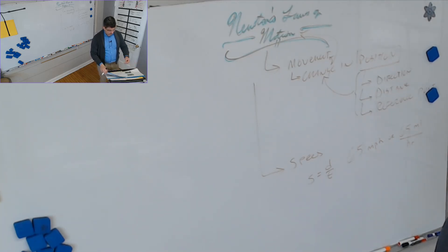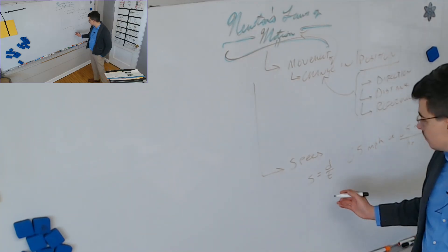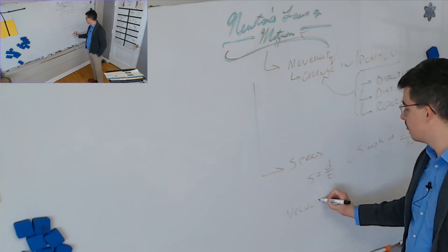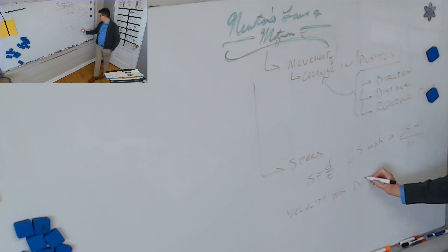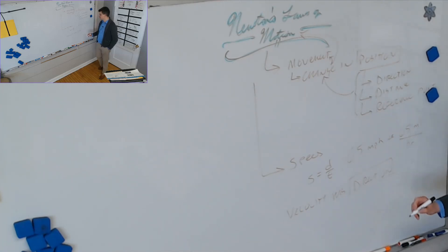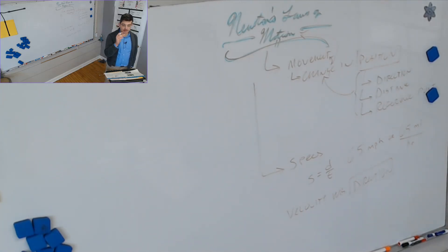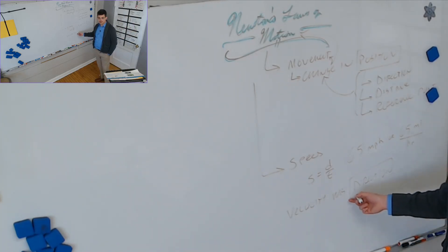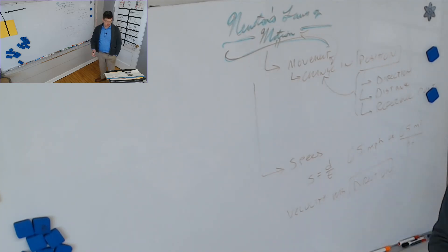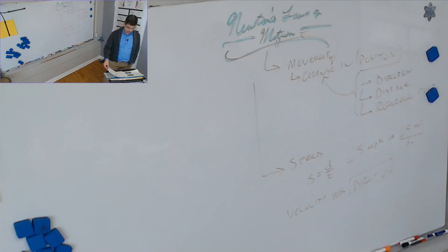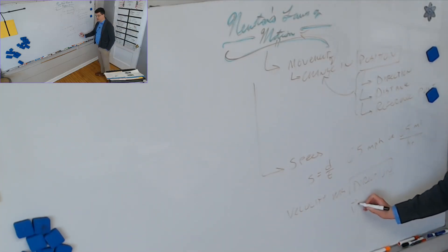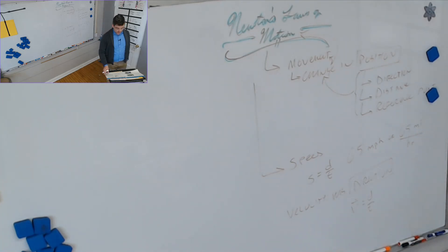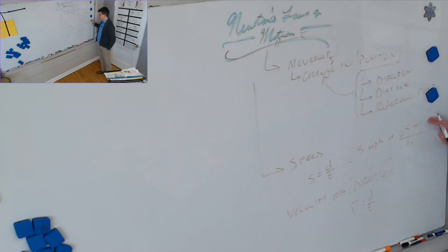How is velocity different from speed? Velocity has a specific direction. As a review: acceleration is a change in motion — either an increase in speed, a decrease in speed, or a change in direction. Velocity is speed in a certain direction, written as v with an arrow over it. It's calculated as displacement divided by time, where displacement is directional as well.